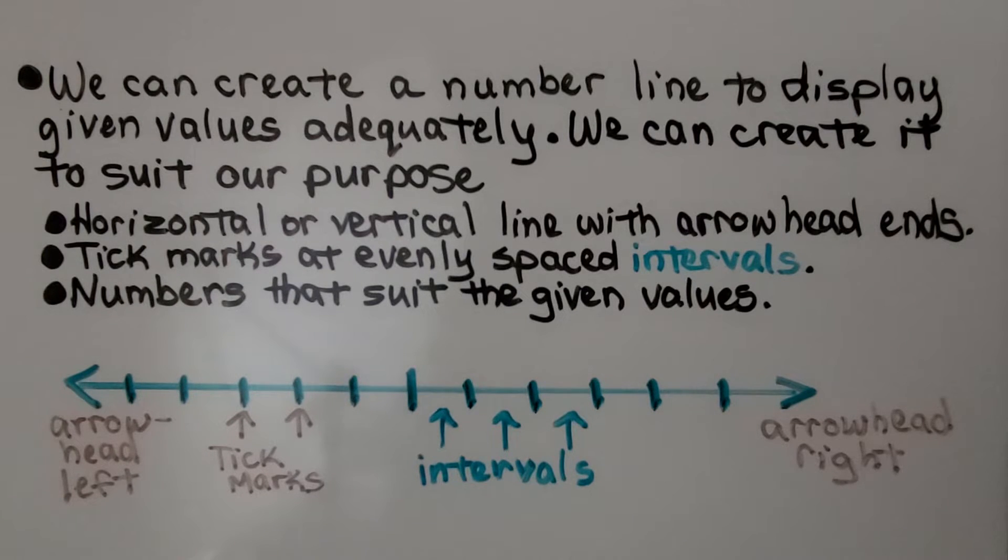We have horizontal or vertical lines with arrowheads at the ends. And we need tick marks at evenly spaced intervals. Intervals are the space between the marked values on a number line. And we'll need numbers that suit the given values.